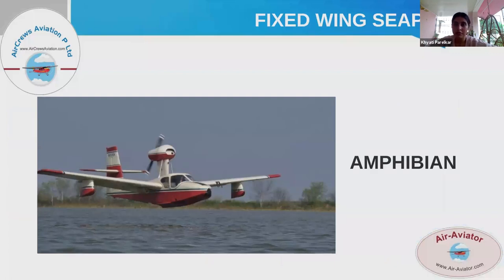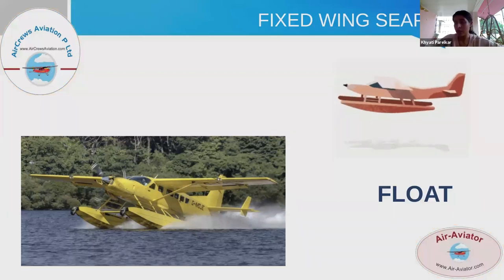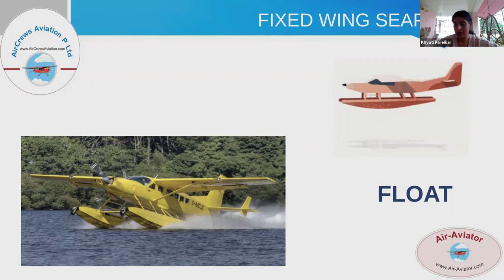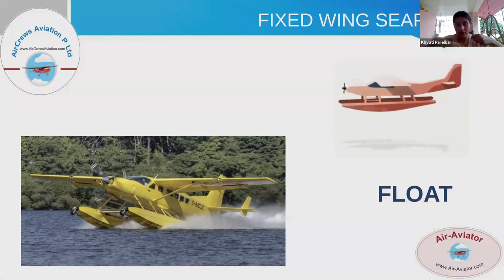Next we have fixed-wing sea planes — aircraft that can land and take off from water. One example is an amphibian, which can take off and land on both land and water. Another example is a float plane, which is a type of sea plane with one or more slender floats under the fuselage that help the plane float on the sea surface. The fuselage is the main structure of the airplane.